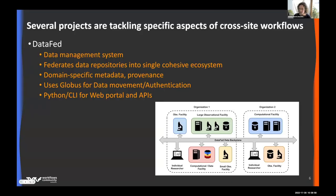There are many projects tackling specific aspects of a cross-site workflow. One example from Oak Ridge is DataFed — a project dealing specifically with the data management challenge. It federates data repositories into a single cohesive ecosystem, uses Globus for data movement and authentication, and provides API exposure for handling movement of data between sites. It also addresses some of the fair data challenges.